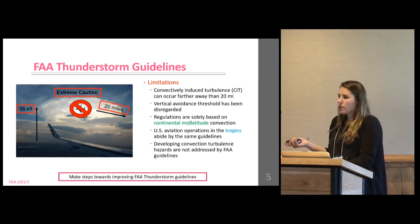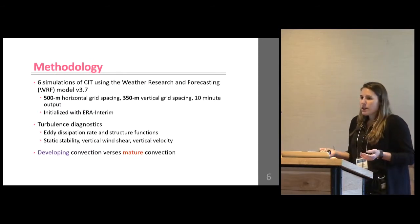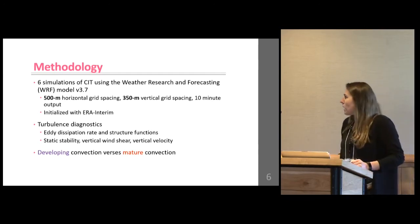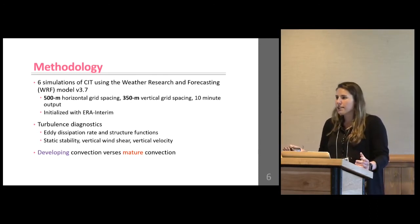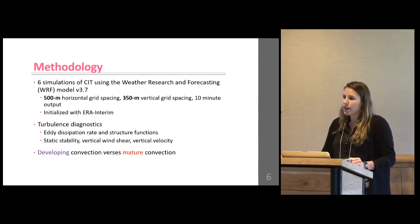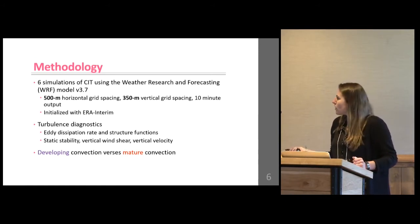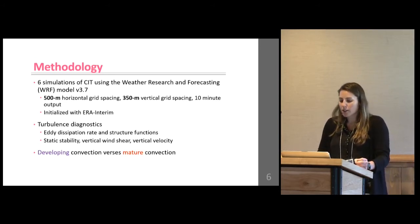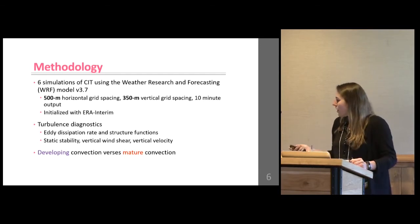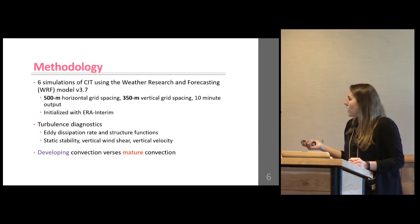The goal is to make steps towards improving our guidelines. Generally, turbulence simulations are kind of case studies here and there, and it's hard to translate that into policy. So the goal with this study was to begin a database for convectively induced turbulent encounters at high resolution. Six simulations were done using the Weather Research and Forecasting model, using 500-meter horizontal grid spacing and 350-meter vertical grid spacing at 10-minute output, which is important because we can capture the life cycle of convection.